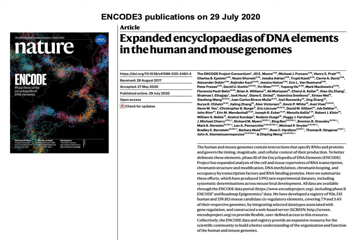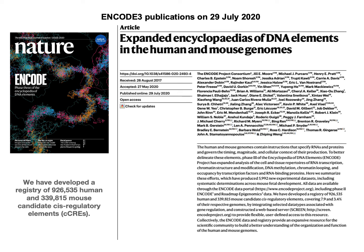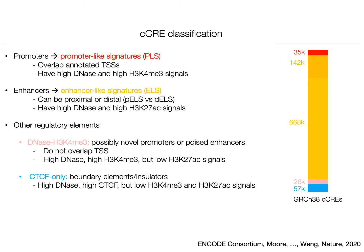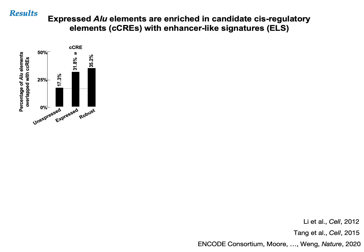The results of ENCODE phase 3 were published in a number of Nature papers in July 2020. Here is the main paper, which includes our work on a registry of nearly one million human candidate cis-regulatory elements, abbreviated as cCREs. We classified our cCREs into groups by their epigenetic signals, which are predictive of their functions, such as cCREs with promoter-like signatures or PLS, and cCREs with enhancer-like signatures or ELS. Although only 17% of unexpressed Alu elements overlap cCREs, approximately twice as many expressed Alu elements overlap cCREs. We observed a similar increase of expressed Alu elements when we only considered the cCREs with enhancer-like signatures or ELS.